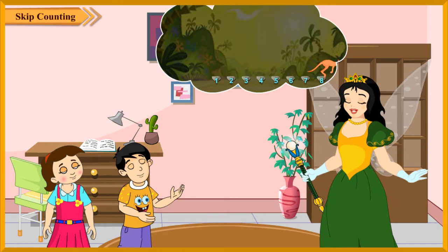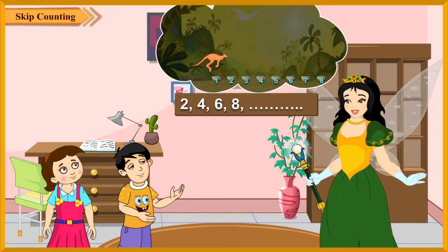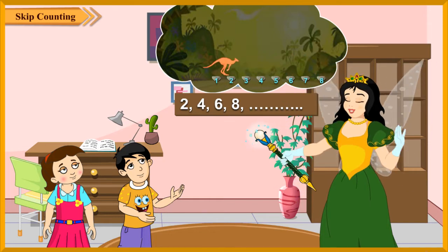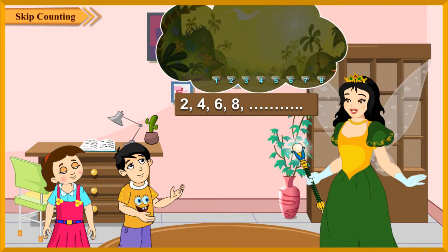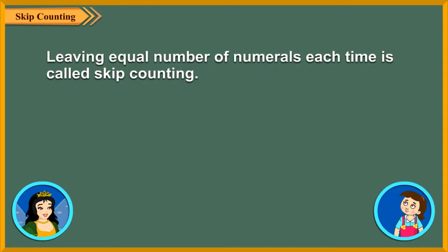He can jump two stones together: 2, 4, 6, 8, and so on. When we skip numbers while counting, we get the sequence as shown here. Leaving an equal number of numerals each time is called skip counting. The sequence shown here is skip counting in twos.